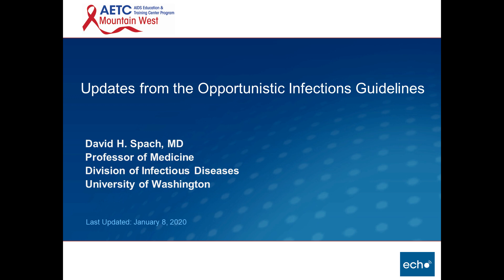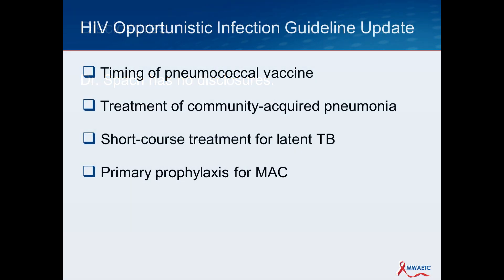Today's talk is going to be a quick update on a few new things in the opportunistic infection guidelines. I do not have any disclosures. These are the four things I'm going to briefly discuss in approximately the next 15 minutes: the timing of the pneumococcal vaccine, new recommendations for treatment of community-acquired pneumonia in persons with HIV, logistical issues around short course treatment for latent tuberculosis infection, and where we're at with MAC prophylaxis.